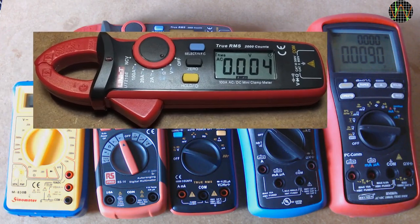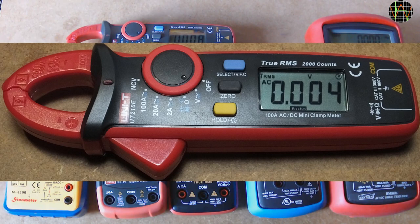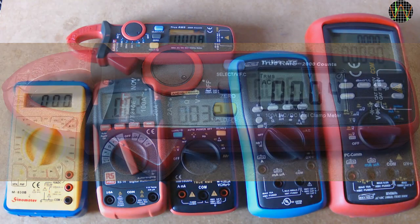The Unity UT-210E? Yes, proudly proclaiming true RMS above the display and to make sure TRMS in the display. This sells currently for £36.